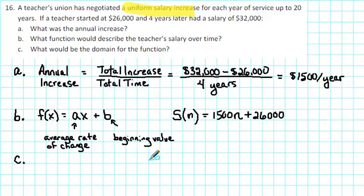So C, what would be the domain for the function? Well, the domain is the set of acceptable inputs. In this case, I'm assuming that the salary doesn't go up continuously. The teacher would get an increase each year. So we would have the initial year. We'll write domain equals the set containing 0 would give us the initial salary.